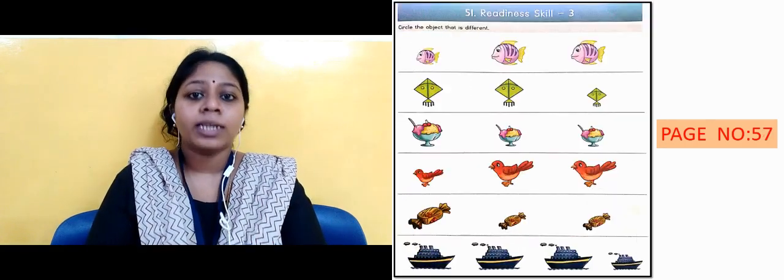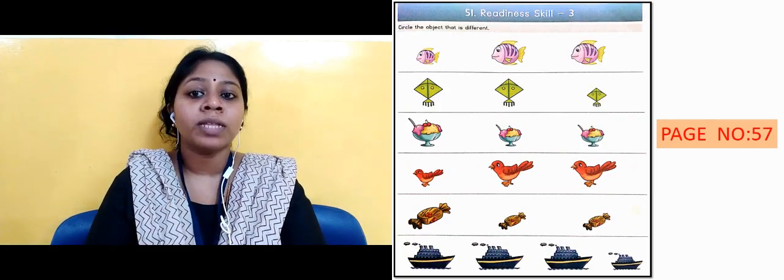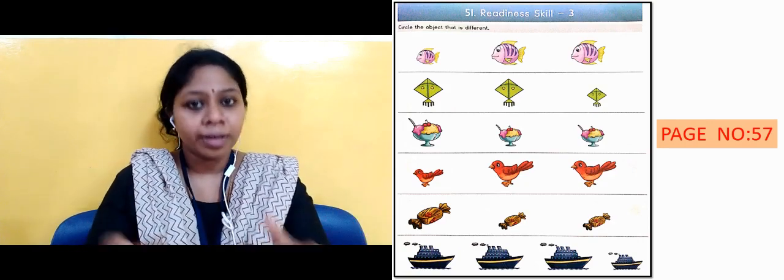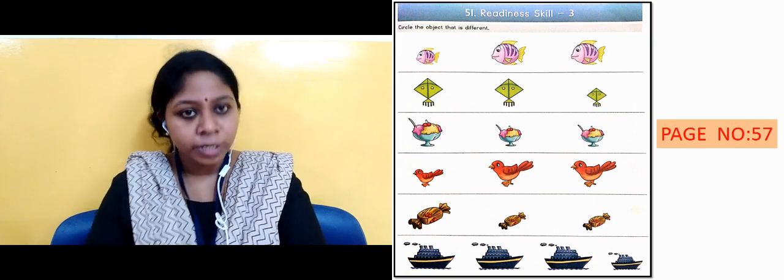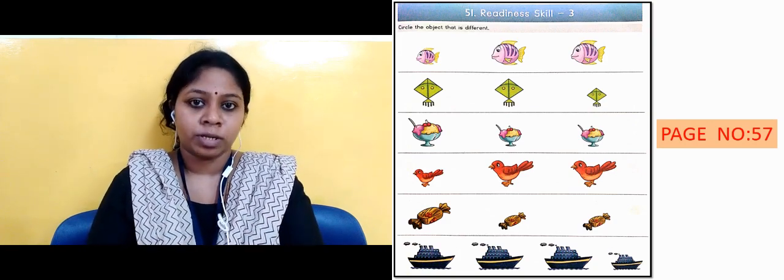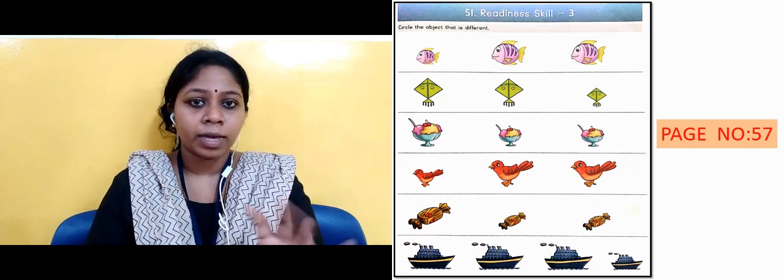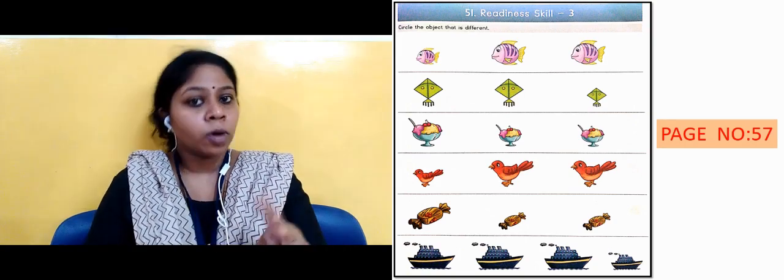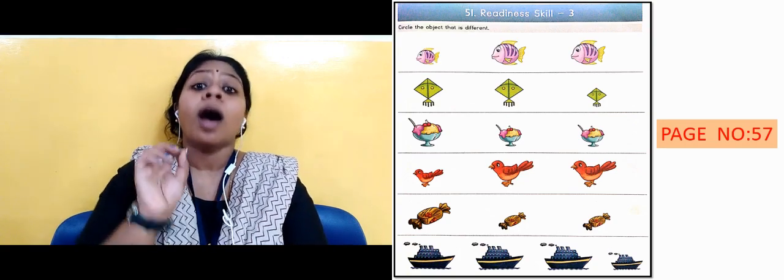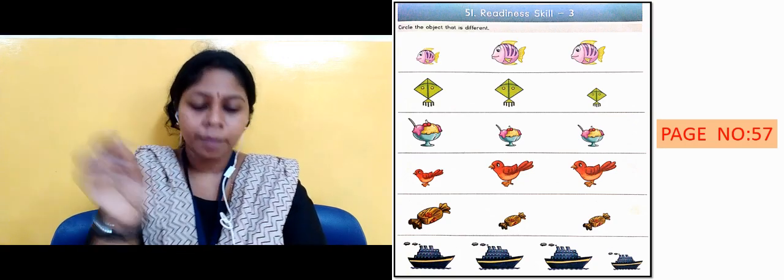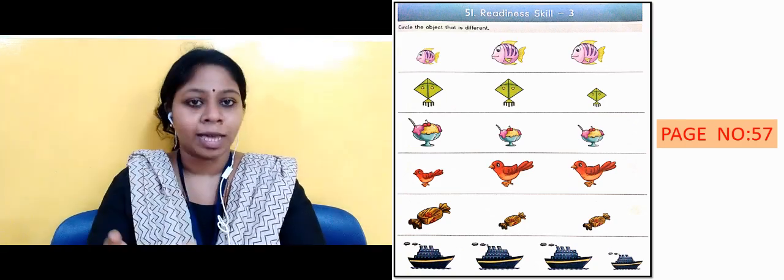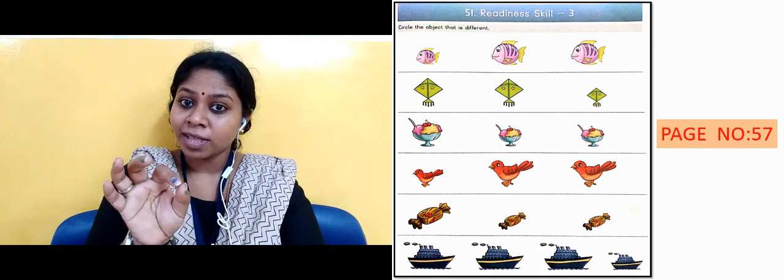Coming to the next slide is page number 57. In it was readiness skill 3. And what was in it? The one that is odd, the one that looks different, you had to circle that. First example is the fish, right? In that the smallest fish is different. The other two are equal, similar. So what did we do? We circled the small one. So you have to do so many things. You have already done this and it's easy, I think. You will do it well.